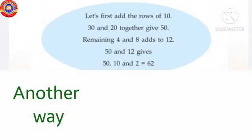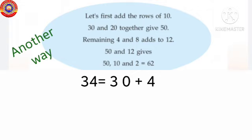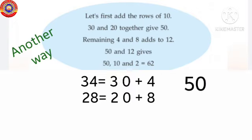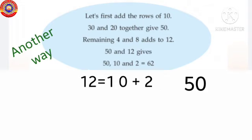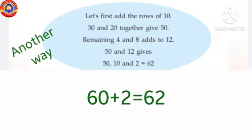Another way: 34 plus 28. Here 34 means 30 plus 4, 28 means 20 plus 8. First we add tens, that is 30 plus 20, that is 50. Then add 8 and 4, that is 8 plus 4 equals 12. 12 means 10 plus 2. Now we have 50 plus 10, 60. 60 plus 2, 62.